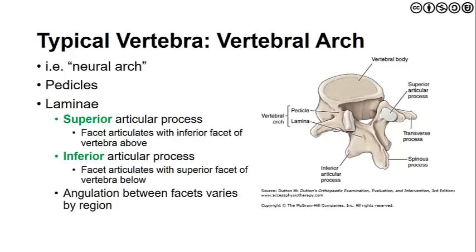Next, let's look at the vertebral arch. It is made up of the pedicles and the lamina — the lamina being the more posterior aspect, the pedicle attaching directly to the vertebral body. On the lamina we find a superior articular process and an inferior articular process, paired left to right. These articulate with the inferior process above and the superior process below of adjacent vertebrae.